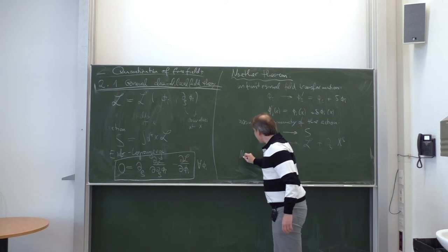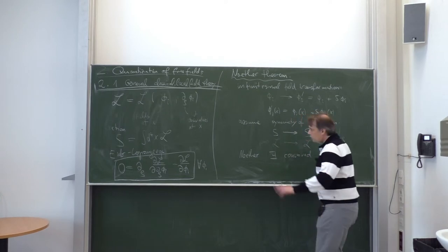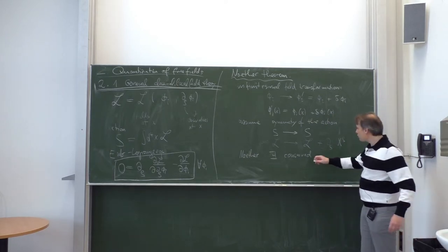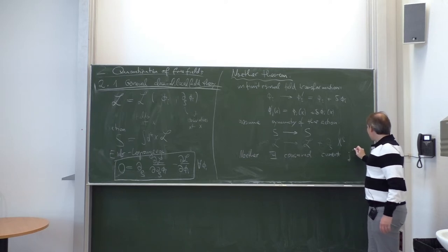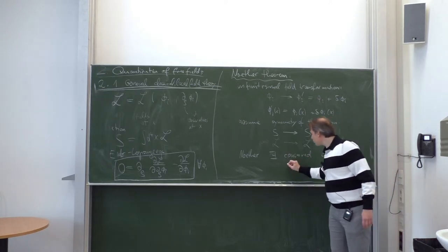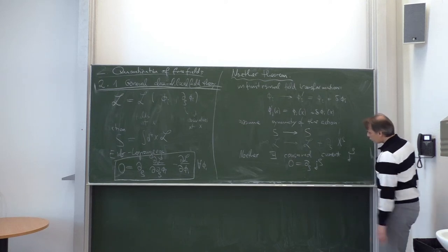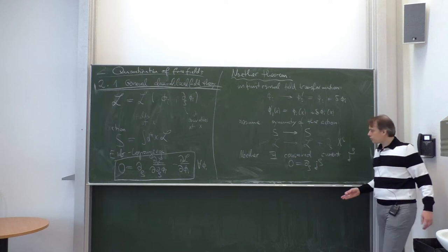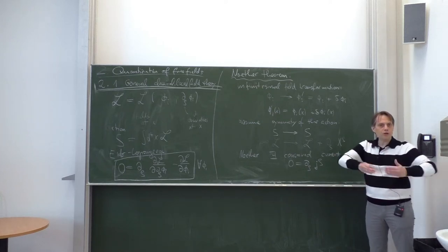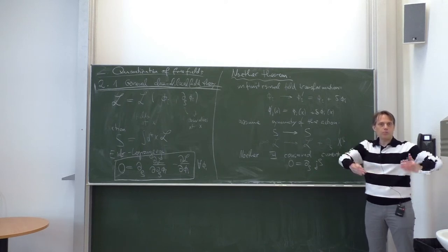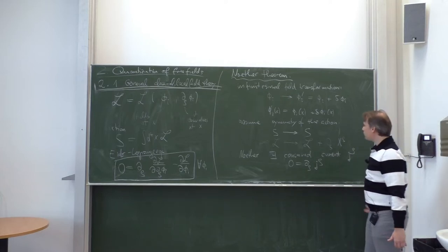The Noether theorem tells us that there exists a conserved quantity. In our local field theory setup, this is not only globally conserved but locally conserved — a conserved current j_rho satisfying the continuity equation 0 = d_rho j_rho. This is the same equation satisfied by the electric current and electric charge. Globally speaking, the charge is conserved but can move around: charge in some volume can change only by charge flowing through the surface area of the region.